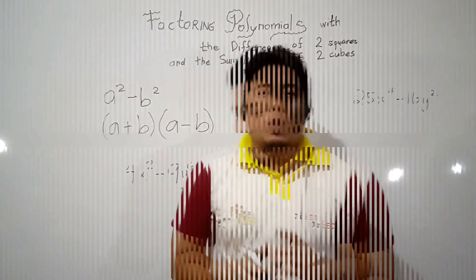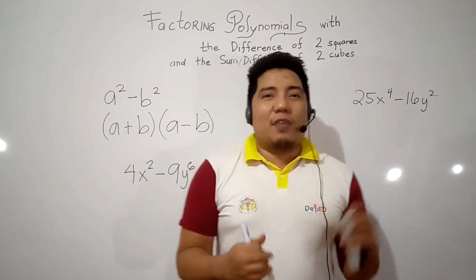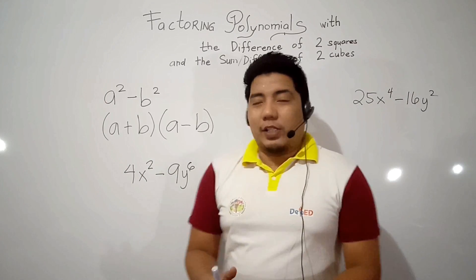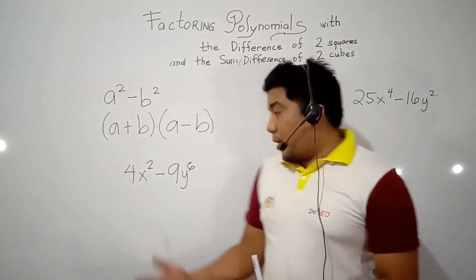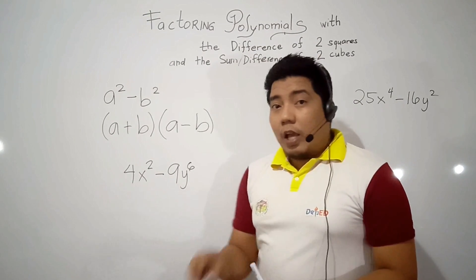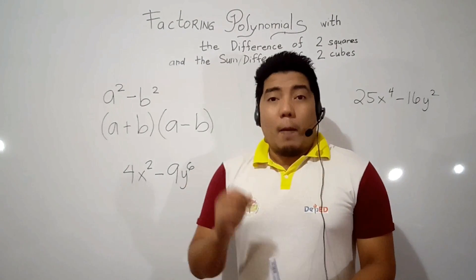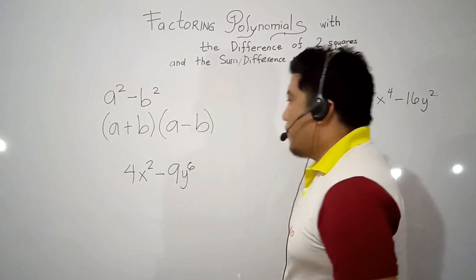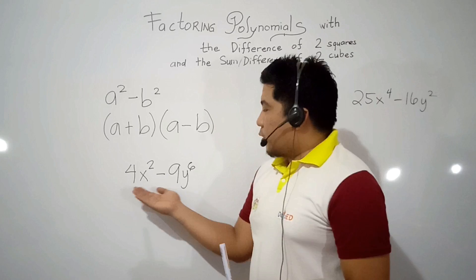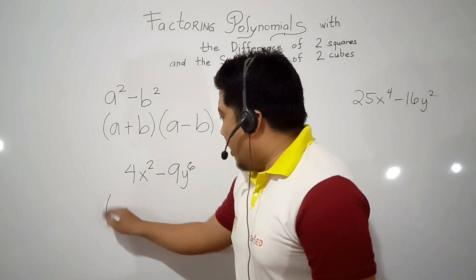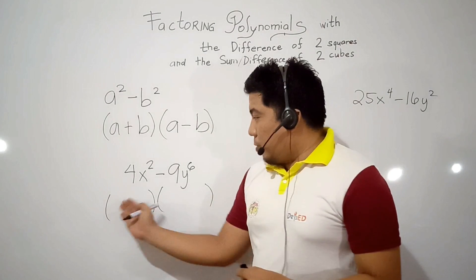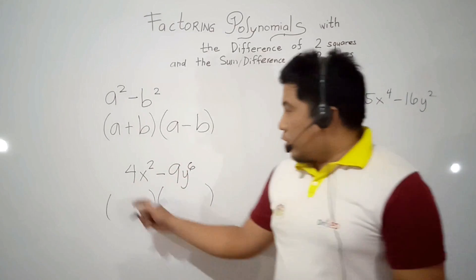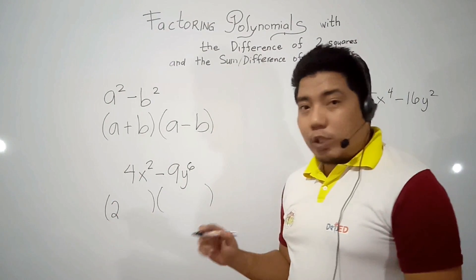Now let's put it into examples. I have here two examples of binomials which are considered to be the difference of two squares. Remember that it is called the difference of two squares because: number one, it is subtraction; and number two, the two terms are both perfect squares. When we say perfect squares, it has its own square root. So let's consider this example: 4x squared minus 9y to the 6. In factoring, you make two quantities. You factor this one. What is the square root of 4x squared? The square root of 4 is 2. The square root of x squared is x.